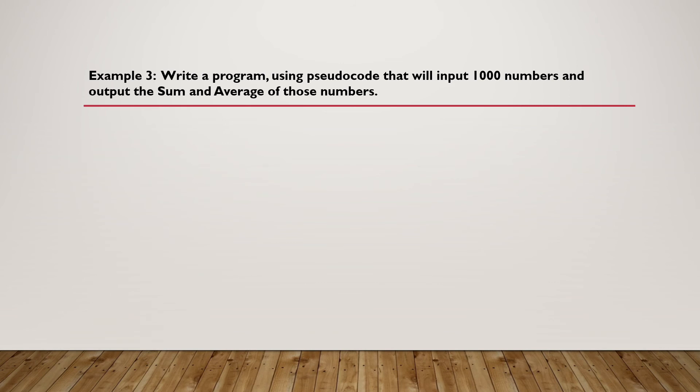Example 3: write a program that will input 1000 numbers and have the sum and average of those numbers. Again, we are going to have the same procedure as before. Initialize count to zero, have count less than 1000 because we have to input 1000 numbers, input number, set sum to zero.